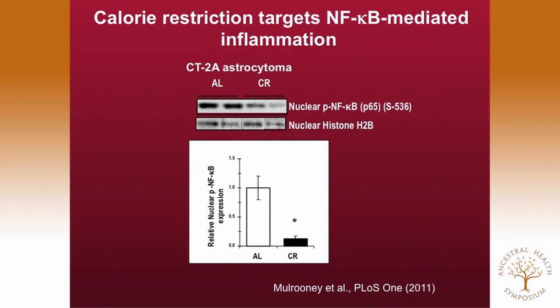We've just recently shown how calorie restriction can target the most problematic aspect of cancer's inflammation, which is NF-kappa B. Calorie restriction knocks down phosphorylated NF-kappa B through COX mechanisms, shutting down the entire inflammatory system that's driving and contributing to the progression of the disease. In brain cancer especially, these terribly invasive tumor cells don't just grow as a lump in the brain — they actually spread through the brain.